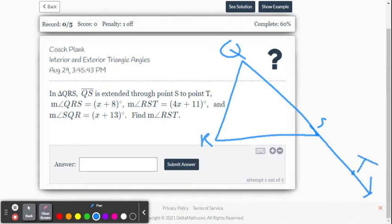So now let's put in the information they're giving us. They say that measure of angle QRS is x plus 8. So QRS, that's this angle here. That's x plus 8.